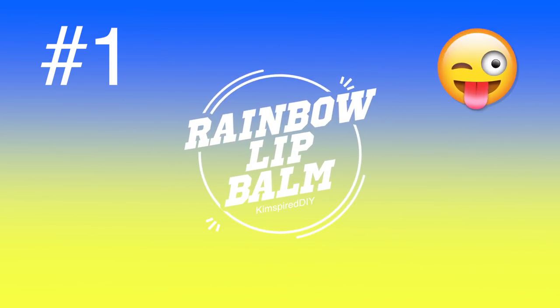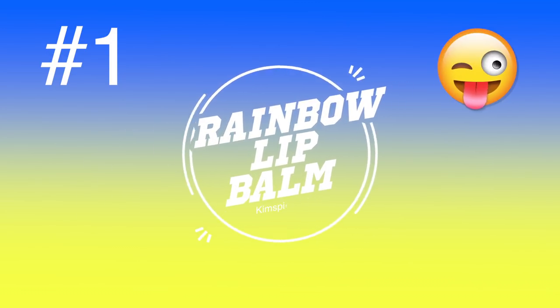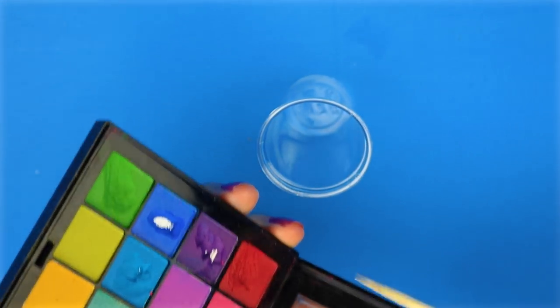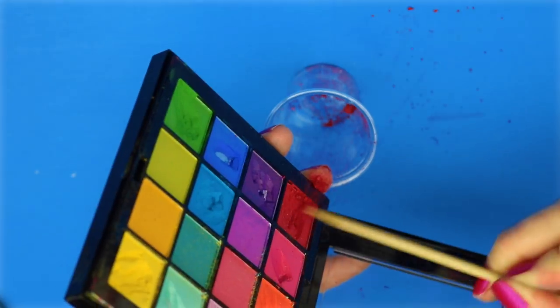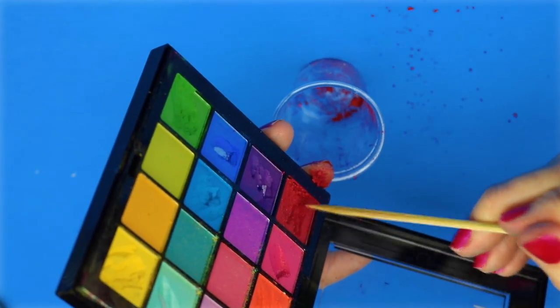The first DIY will be rainbow lip balm. For this one, I'm going to use rainbow colored eyeshadow. If you don't have rainbow colored eyeshadow, you can also use Kool-Aid.